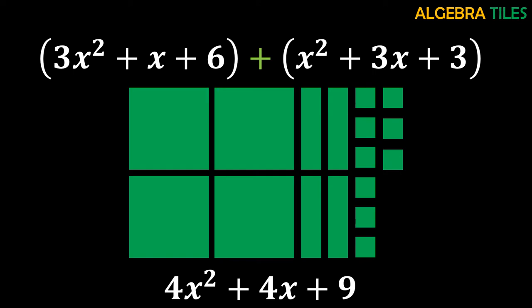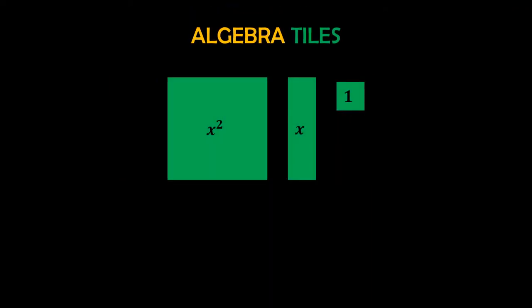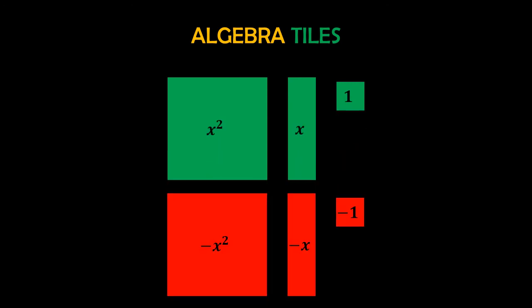That was addition of polynomials, but before moving forward I want to introduce something very important. So far we have used three tiles: x squared, x, and 1. But sometimes you have negative terms as well. To handle them we use the same size tiles but in red color. Whenever you have a negative term you use the same tile in red, and whenever you have a positive term you use green. This way you can easily visualize which term is negative and which is positive.